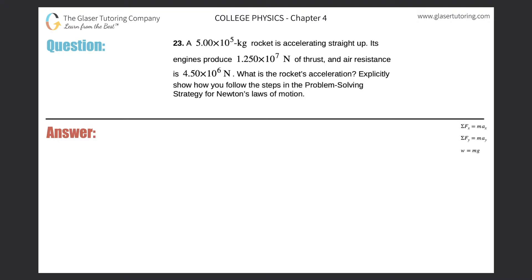Number 23: A 5.00 times 10 to the 5 kilogram rocket is accelerating straight up. Its engines produce 1.25 times 10 to the 7 newtons of thrust and air resistance is 4.5 times 10 to the 6 newtons. What is the rocket's acceleration? Explicitly show how you follow the steps.